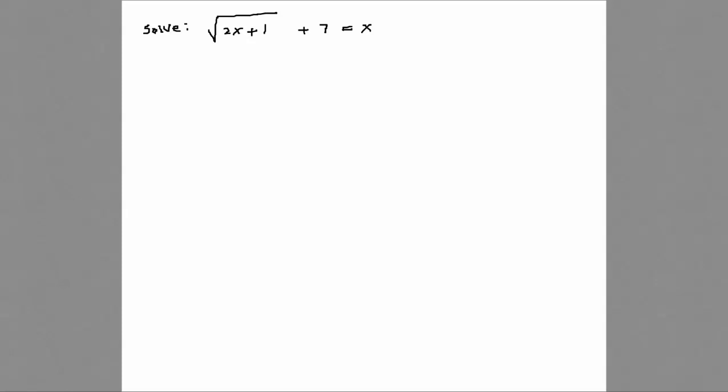To solve the square root of 2x plus 1 plus 7 is equal to x. This is slightly different from the one we did earlier. Can somebody tell me what would be your first step here and what's the difference between this one?